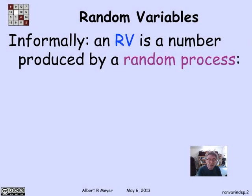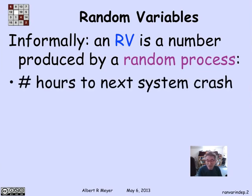Let's begin by looking at the informal idea. A random variable is a number that's produced by a random process. A typical example is you've got some system that you're watching, and you're going to time it to see when the next crash comes. Assuming that it happens in some random way, the number of hours until the next crash is a number produced by this random process.